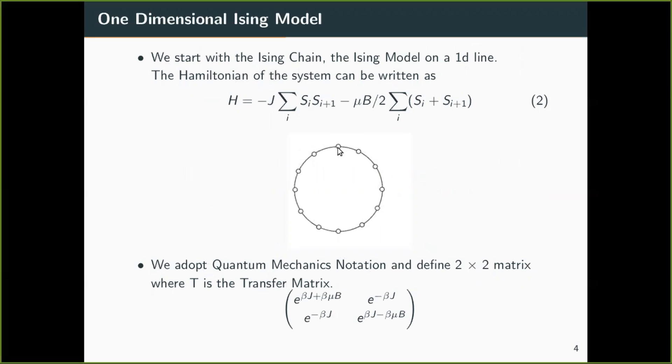So this means that if this is the first lattice site, this is also the N plus one lattice site. Now the Hamiltonian can be written like this because one dimensional Ising model will only interact with its nearest neighbour.